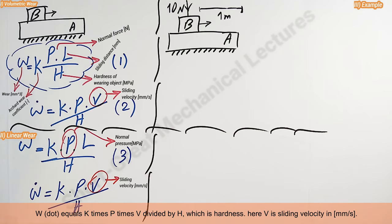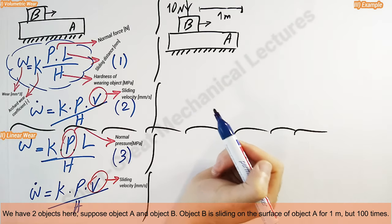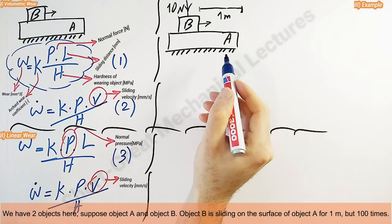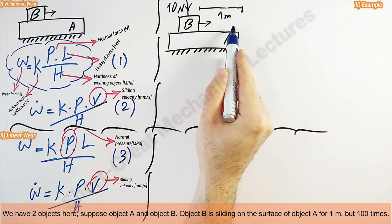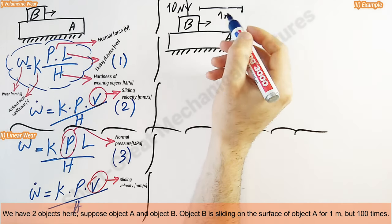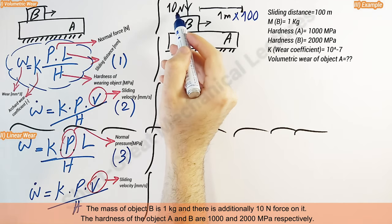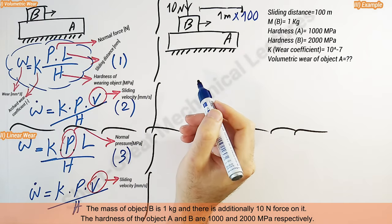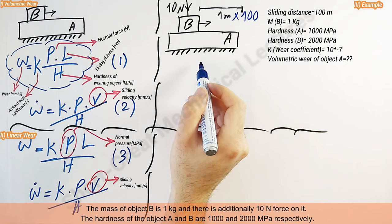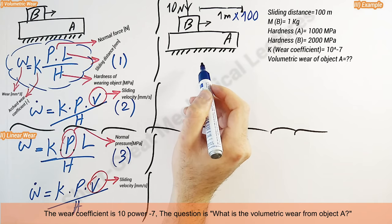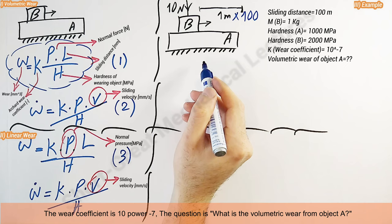Now let's solve a simple problem in order to illustrate these things. We have two objects here, suppose object A and object B. Object B is sliding on the surface of object A for 1 meter, but 100 times. The mass of object B is 1 kilogram and there is additionally 10 newton force on it. The hardness of object A and B are 1000 and 2000 megapascal respectively. The wear coefficient is 10 power minus 7. The question is, what is the volumetric wear from object A?